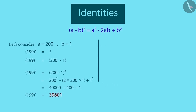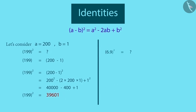Let's see the next example. Can you find the value of 6.9 raised to the power of 2? It can be done in a similar way by splitting 6.9 into two simple numbers. So, 6.9 can be split into two simple numbers: 7 and 0.1. So, 6.9 raised to the power of 2 will be equal to 7 minus 0.1 raised to the power of 2.